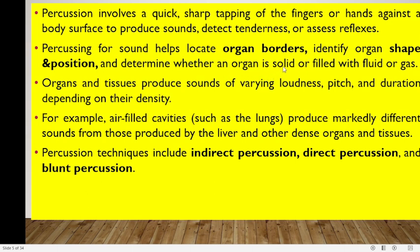Percussion helps locate organ borders — this is particularly important when examining the liver. Organs and tissues produce sounds of varying loudness, pitch, and duration depending on their density. For example, air-filled cavities like the lungs produce markedly different sounds from those produced by the liver and other dense organs. Percussion can be of three types: indirect percussion, direct percussion, and blunt percussion.